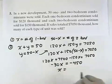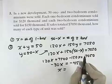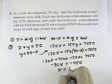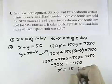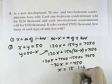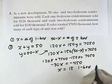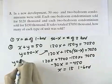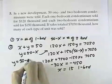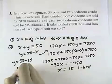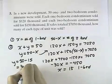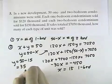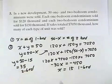So X, if we divide both sides by negative 30, will equal 15. So there are 15 one-bedroom condos. Going back, Y equals 50 minus X, which was 15, so that will be 35 of the 2-bedroom condos that are sold.